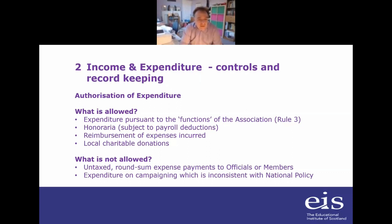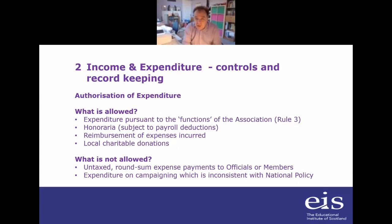Things that are not allowed: untaxed round sum expense payments to officials or members. For example, you cannot pay your LA secretary £200 a month for undocumented phone calls, letters, whatever. That is not allowed — it creates a tax problem for the association and the institute, and it means expenditure is going out that is not supported by invoices or other documents.